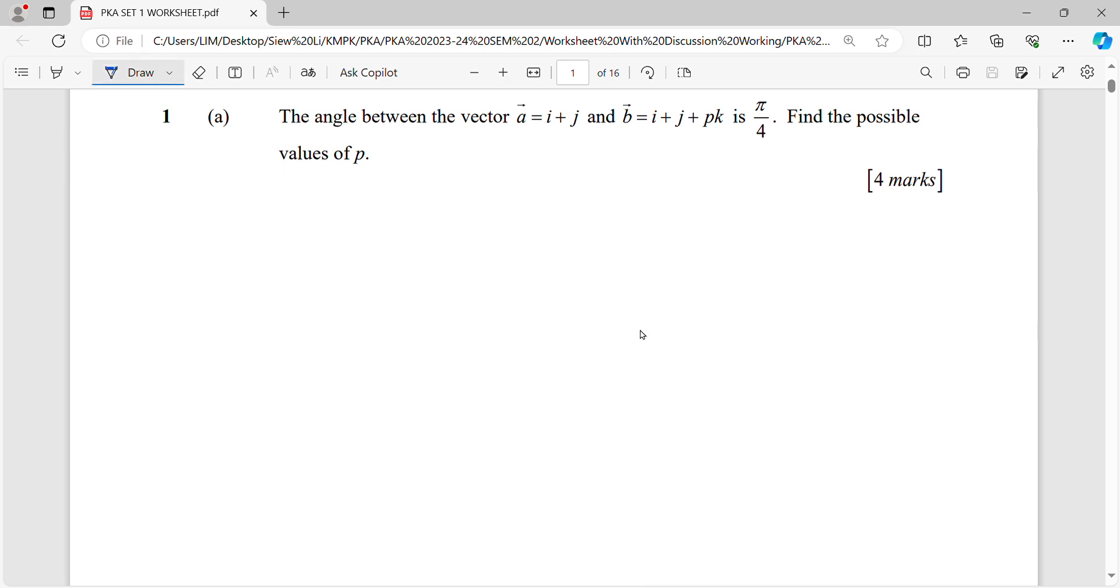Okay, for question 1a, the angle between the vector a, b is pi over 4, so you have two vectors here, find the possible value of p.